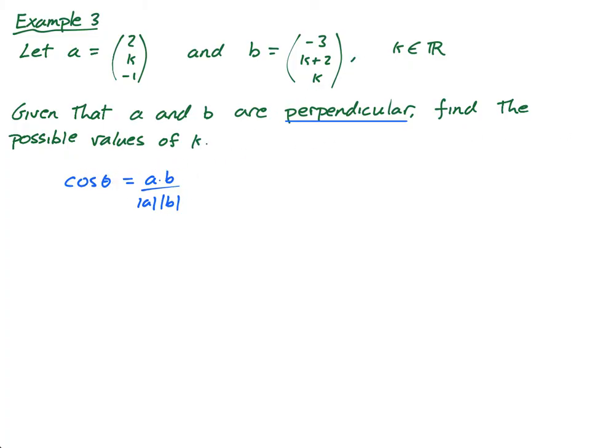So the only way that vectors can be perpendicular is if this is zero, which means this is zero, which means this, because the numerator has to be zero. So when you see perpendicular in vectors, and this comes up all the time, check your past papers. When it comes up, you immediately go, ding ding, a dot b equals zero.